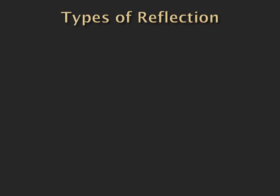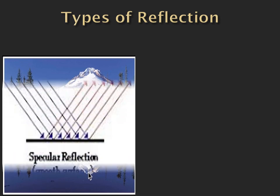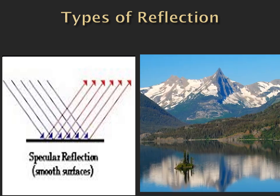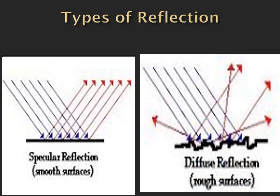Varying reflection is always associated with the texture of the surface. When the water on a lake is still, it gives us a defined reflection. This happens over smooth surfaces and is called specular reflection. But when the water is troubled, it gives us a blurred reflection — the image is not well defined — because of the rough surface. This is called diffuse reflection.